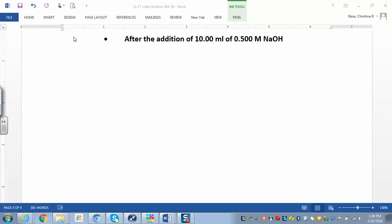For every step, you want to figure out how many moles of acid and how many moles of base you have, and let that tell you whether or not you're at the equivalence point.